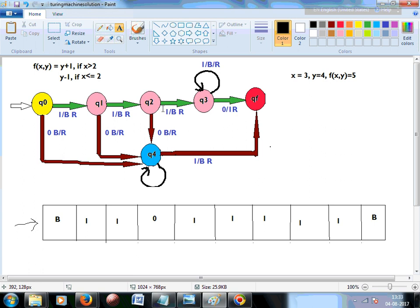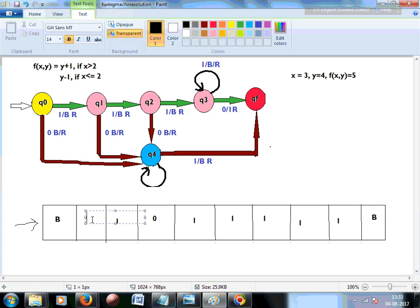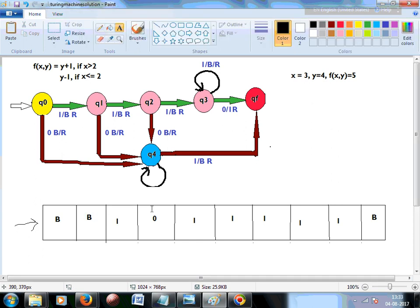Then we move to one more right and make it, if it is still 1, we make it blank. So basically we are moving 3 times ahead just to make sure it is greater than 2, which means just to find out that x is greater than 2. So we are moving 3 times and counting 3 ones, literally. So it is still 1. Next one is 1. So we are in the q2 state over here now.